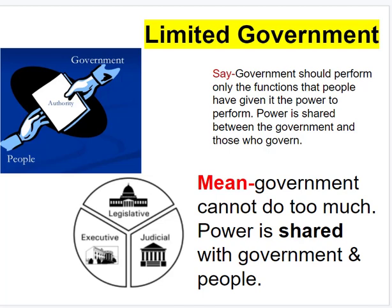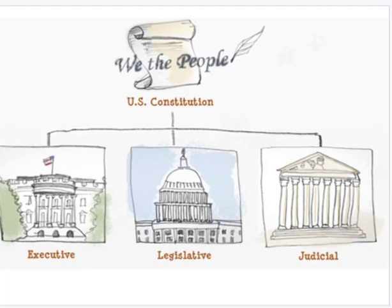The second democratic ideal is something referred to as limited government. Government should only perform the functions that people have given it power to perform, and that power is shared between the government and those who are governed. In a true, healthy democracy, ideally in a perfect situation, government cannot do too much — power is usually shared with the government and its people.